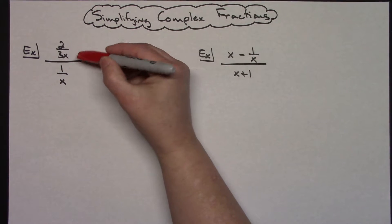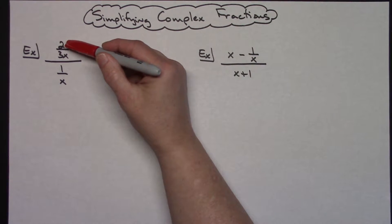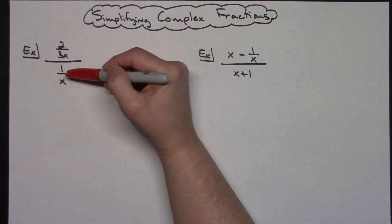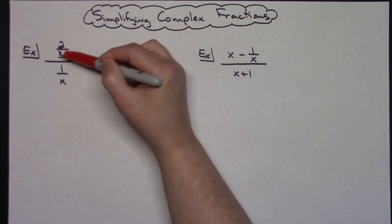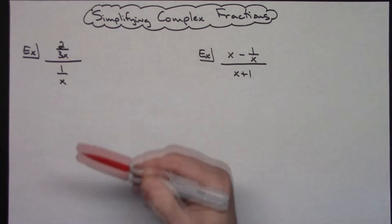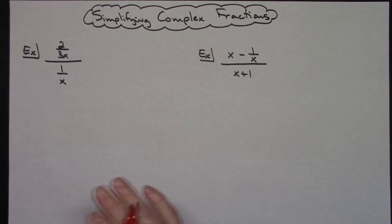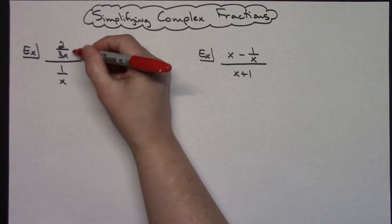For my first example, I've got the complex fraction 2 over 3x in my numerator, and then in the denominator I've got 1 over x. I've got a fraction in the numerator, a fraction in the denominator — that's what makes it a complex fraction. Now what I'm going to do is look at all of my denominators and find the least common denominator.